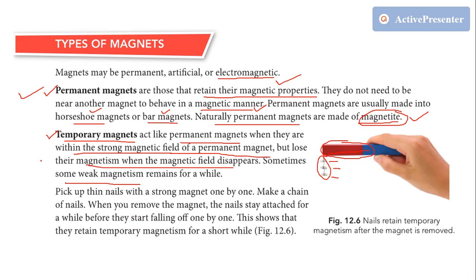So temporary magnets behave as magnets when we place them within the magnetic field of a permanent magnet. And when we remove them from that permanent magnet's magnetic field, their magnetism goes away — or it may remain for a short while and then go away. Their magnetic properties will not be retained.